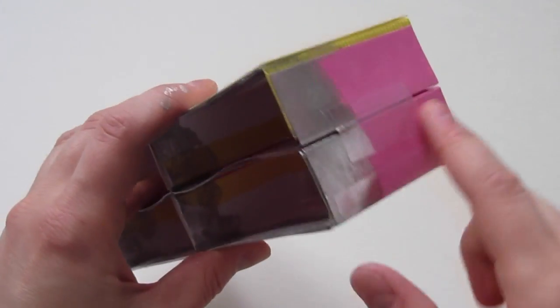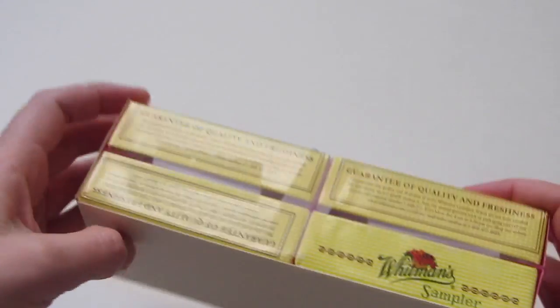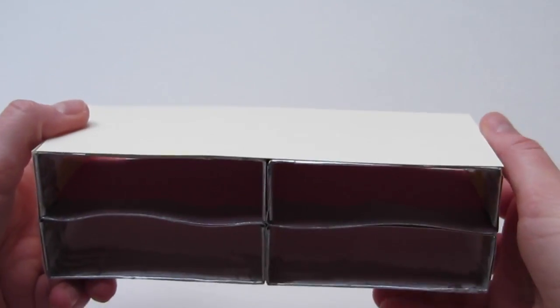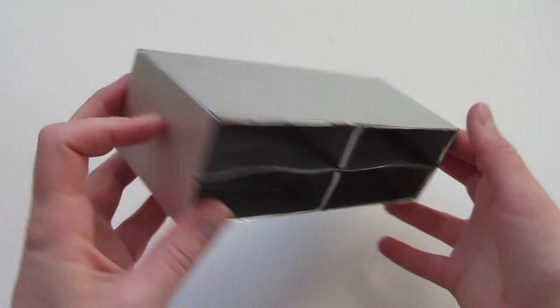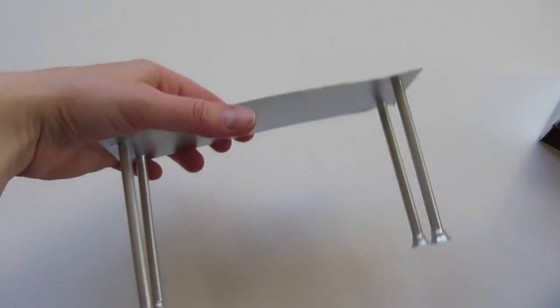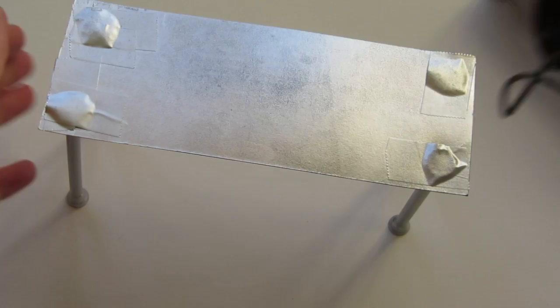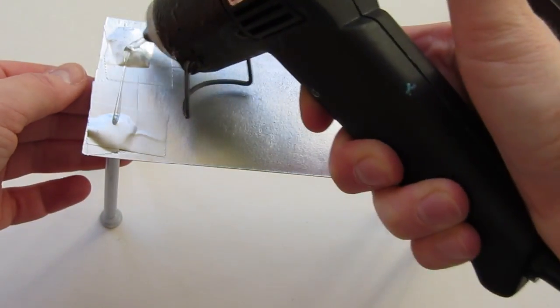Glue pieces of cardstock over the sides, top, and back of the boxes. Paint the cabinet base and the legs. Glue the legs to the base of the table.